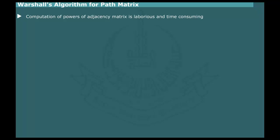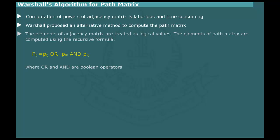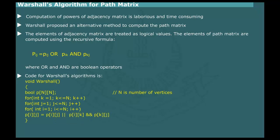The computation of powers of the adjacency matrix is a laborious and time-consuming process. In this formulation, the elements of the adjacency matrix are treated as logical value. The path matrix is computed using the following recursive formula. It is assumed that the path matrix initially contains logical values which correspond to the entries in the adjacency matrix. Remember, character ampersand and bar represent boolean operations AND and OR respectively in C++.